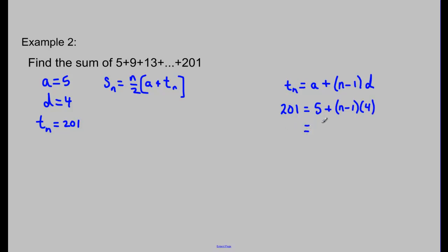So, 201 will equal 5 plus, and then 4 times n is 4n, 4 times negative 1 is negative 4. So, I'm trying to isolate for n. So, I'm going to take this 5, subtract 4 away, which leaves me with 1. And then move it over to the left side. Well, 201, subtract that 1 that's coming over, will equal 200. So, I'm going to get 200 equals 4n. And then divide both sides by 4. And we're left with n is equal to 50.